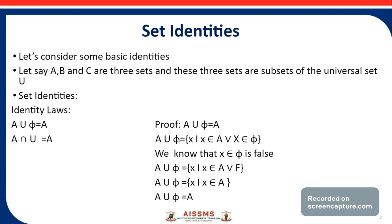Consider the first identity law: A union φ is equal to A. We know that A union φ is the set of all X such that X belongs to A or X belongs to φ. Since φ is the empty set, X belongs to φ is false, so we can replace X belongs to φ by F.